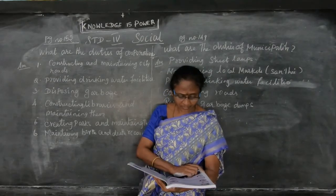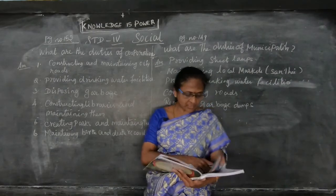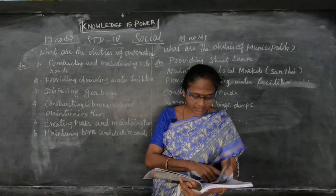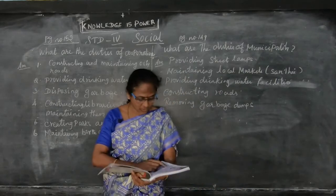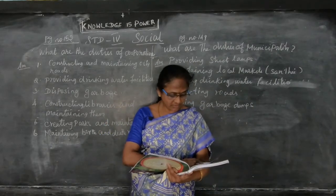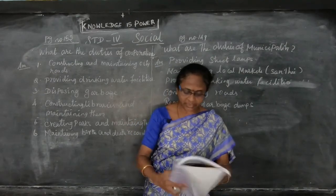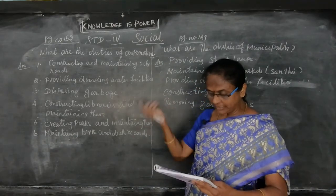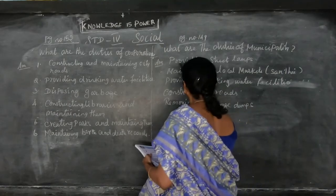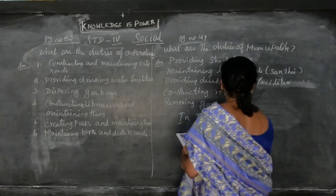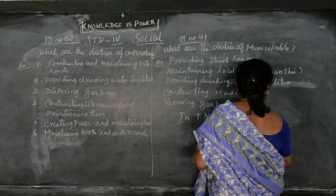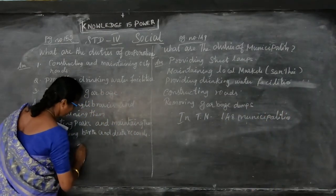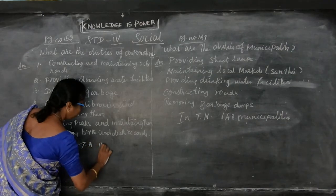What is the municipality? Municipality is the local form of government in a small town where the population is 50,000 to 100,000 people. Each town is divided into several wards. In Tamil Nadu there are 148 municipalities. There are also 15 corporations in Tamil Nadu.